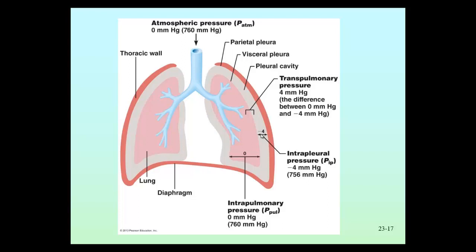And then lastly is the transpulmonary pressure. Essentially what that is — it's the difference between the intrapleural pressure and the intrapulmonary pressure, or the pressure within the alveoli. So if we look at pleural pressure and alveolar pressure, the difference between them is the pressure across the lung wall. Your textbook calls it transpulmonary pressure, and that is basically the pressure of the alveoli minus the pleural pressure. That's what keeps the lungs expanded.